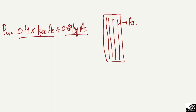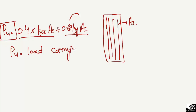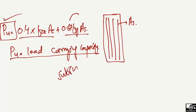When we put all these parameters into the equation, we get PU, which is the load carrying capacity for the column. This equation is used after the design of the column to check whether the column can take the superimposed load or not. Hope you guys understand. Don't forget to subscribe to our channel for E7 Engineering videos. Thank you for watching.